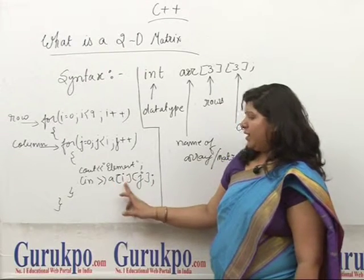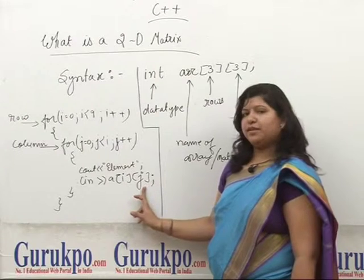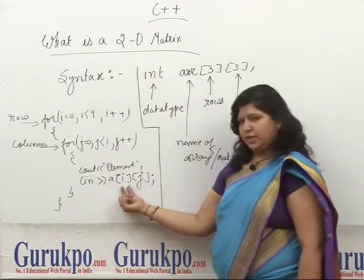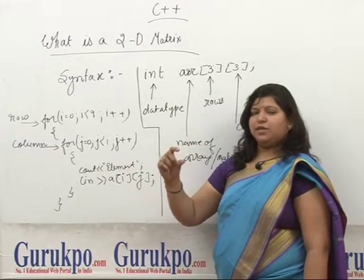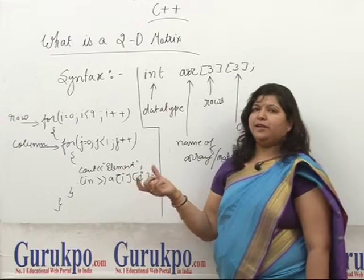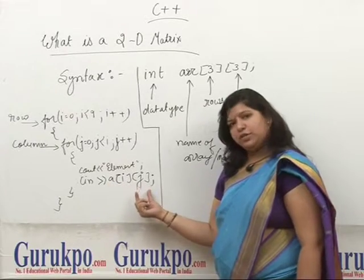As you can see, this A[i][j] - this is the name of the array. i means the number of the row and j represents the number of the column. For example, if I say A[0][0], it means the A array at row 0 and column 0 position. Whatever value is entered by the user will be stored at A[0][0] position.